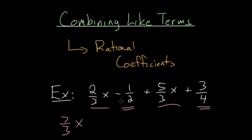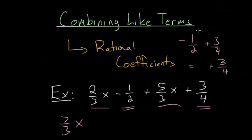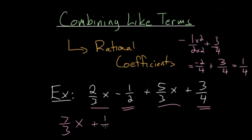With our constants, we have minus one-half plus three-fourths. We'll need to give them the same denominator. We can use a denominator of four, so this fraction stays the same. We'll multiply the top and bottom of one-half by two to get minus two over four plus three-fourths, which simplifies to one-fourth. So this expression simplifies to seven-thirds x plus one-fourth.